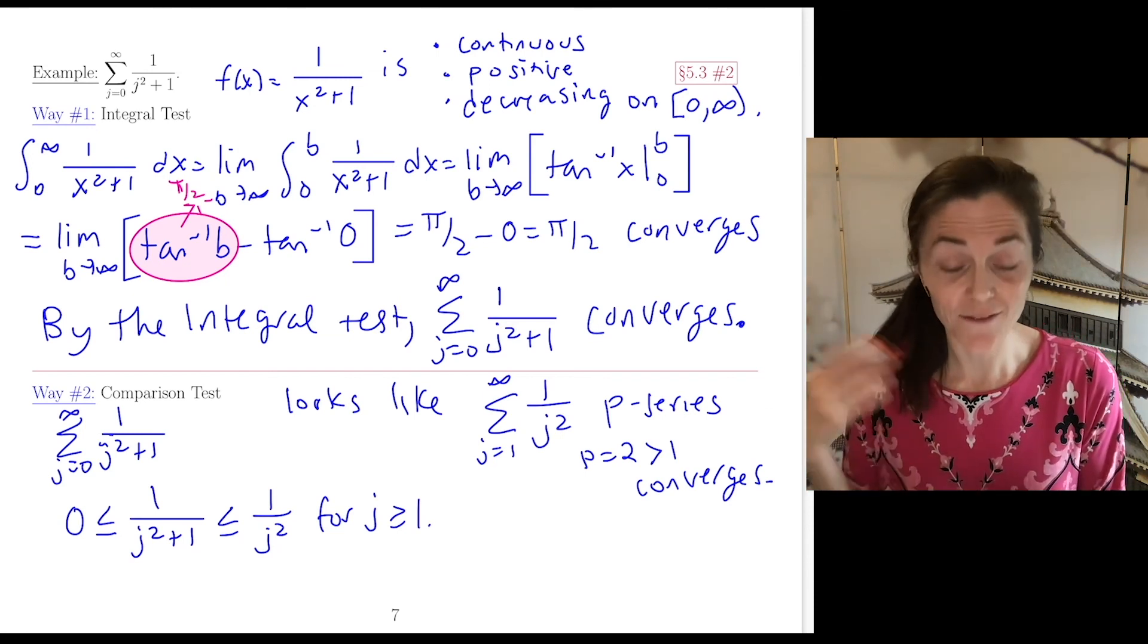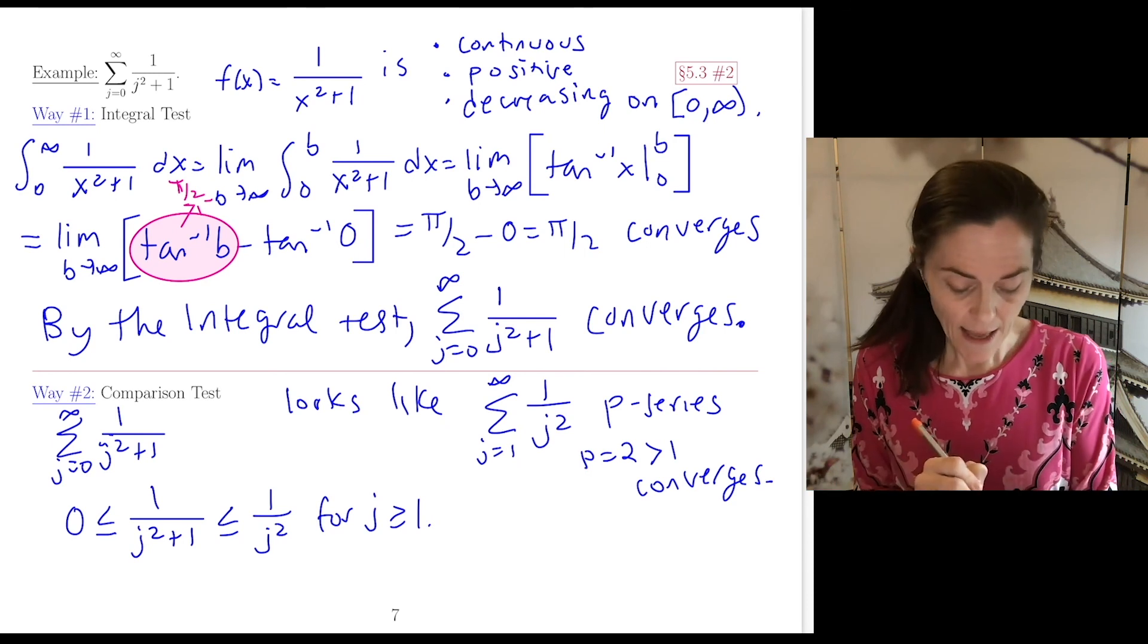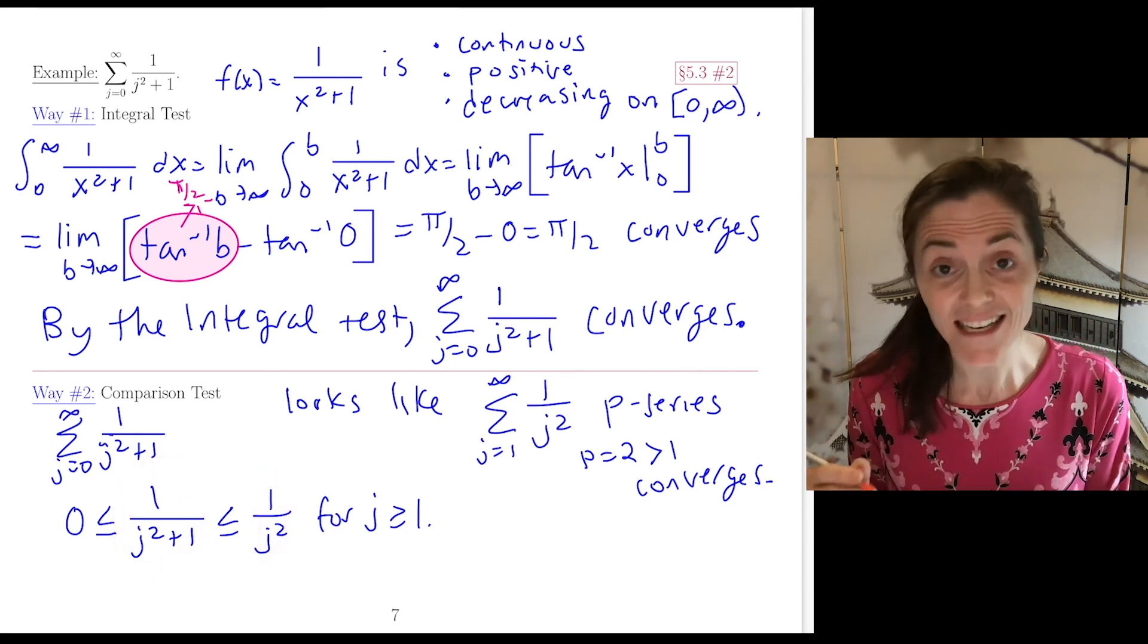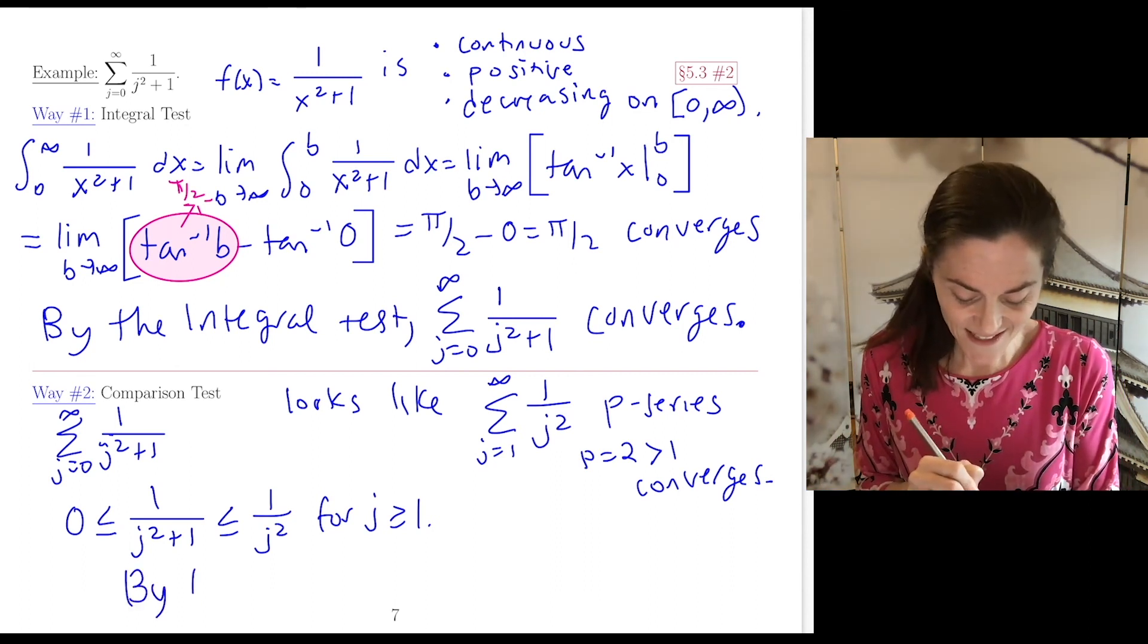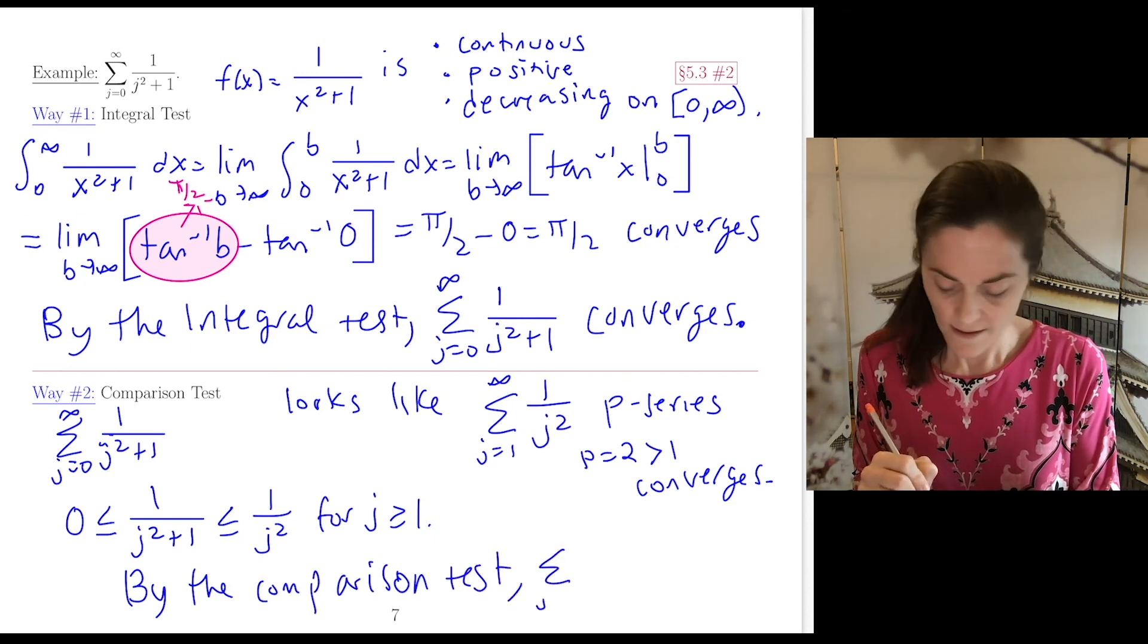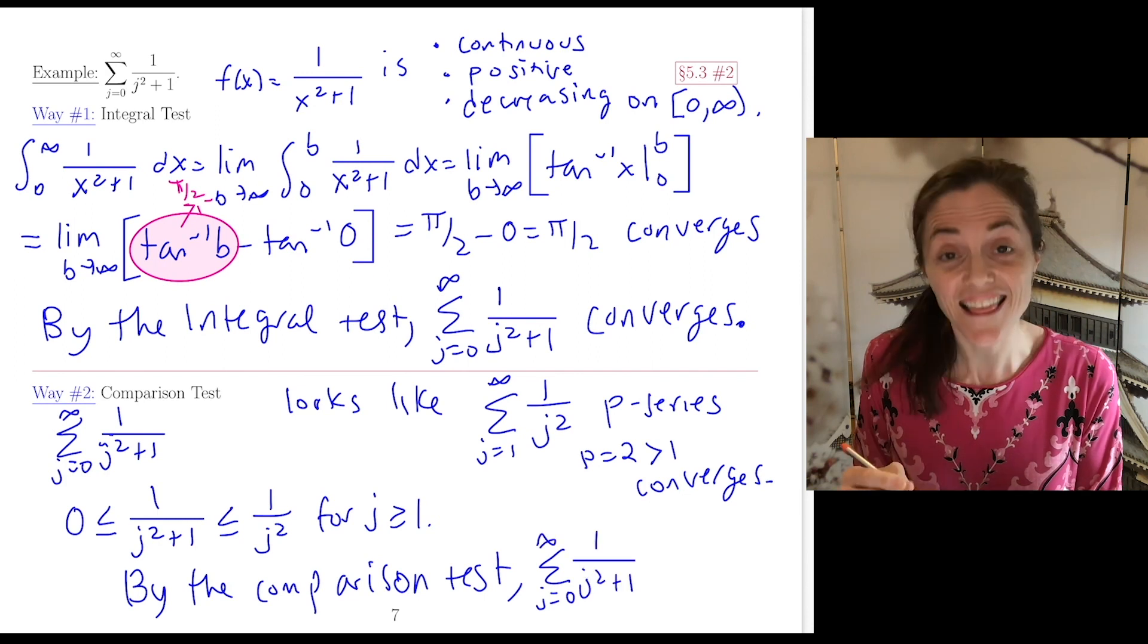This is the comparison. We have two non-negative series, and this one, term by term, is less than or equal to the convergent p-series. By the comparison test, this converges.